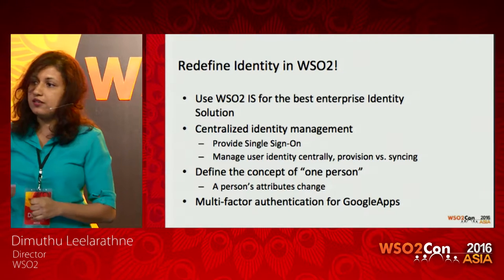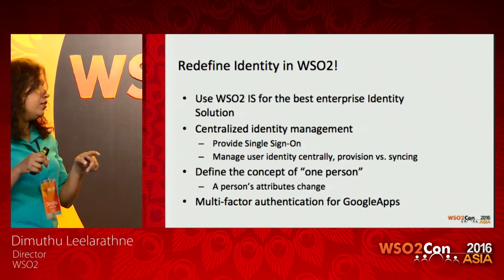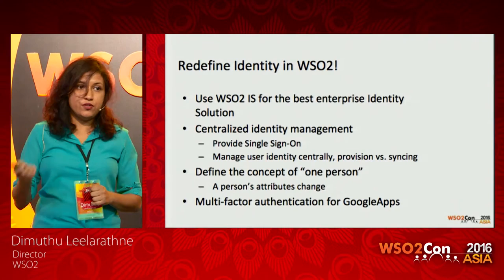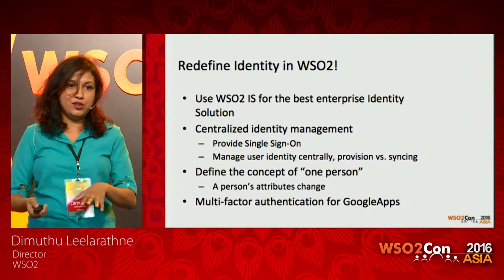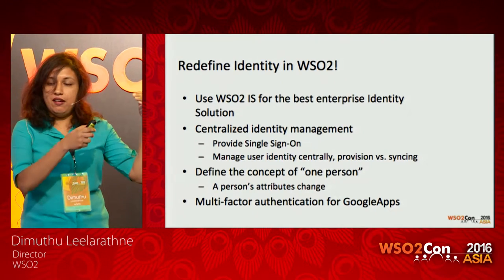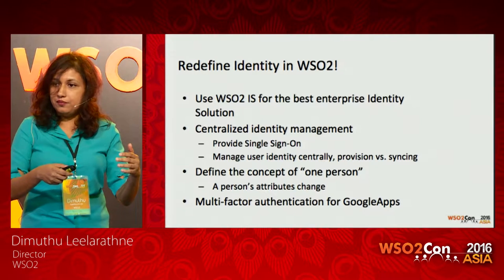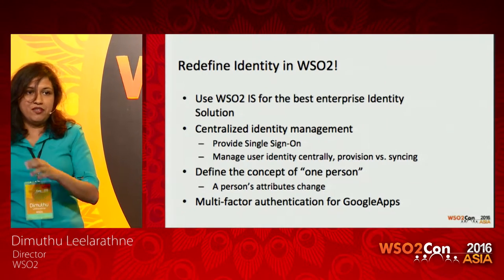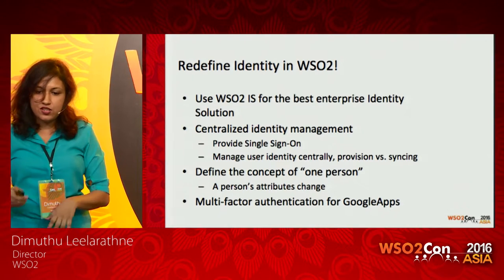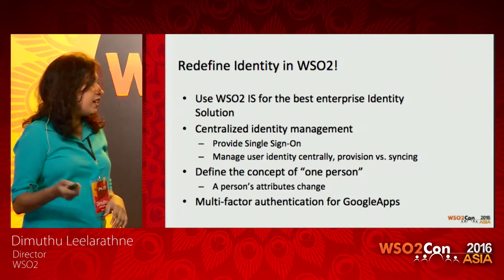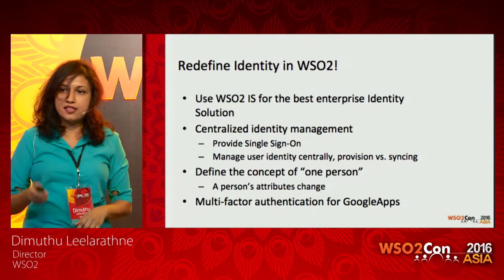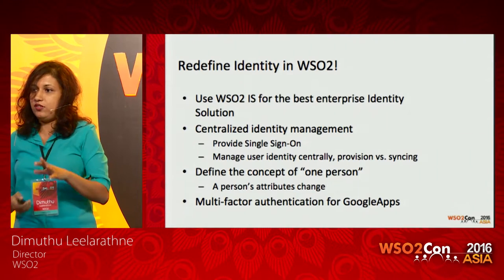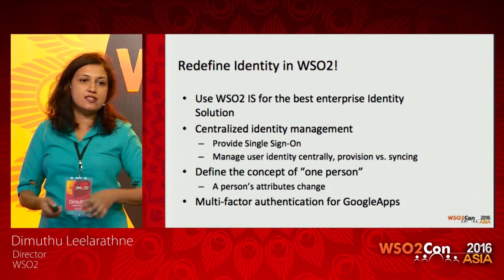We wanted to use provisioning in place of syncing. We also needed to define the concept of one person — right now our LDAP identity is based entirely on a person's email address. If you change it, your identity changes and you lose your history. For example, if you had created 20 tickets as Fatima@gmail.com and then changed to FatimaR, your whole history is lost. The fourth objective was to introduce multi-factor authentication for Google Apps — because we preach about MFA but we don't use it in-house.